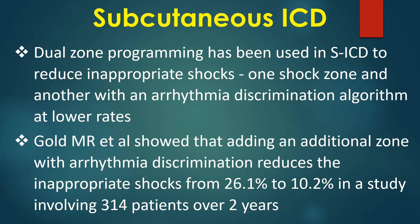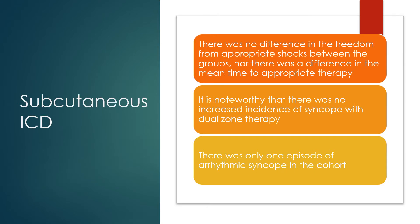Dual zone programming has been used in SICD to reduce inappropriate shocks — one shock zone and another with an arrhythmia discrimination algorithm at lower rates. Gold and Associates showed that adding an additional zone with arrhythmia discrimination reduces inappropriate shocks from about 26.1% to 10.2% in a study involving 314 patients over 2 years. There was no difference in freedom from appropriate shocks between the two groups, nor a difference in mean time to appropriate therapy. Notably, there was no increased incidence of syncope with dual zone therapy; there was only one episode of arrhythmia in the cohort.